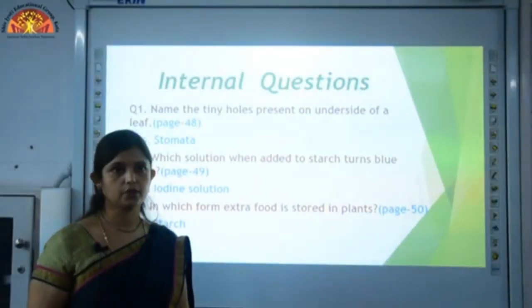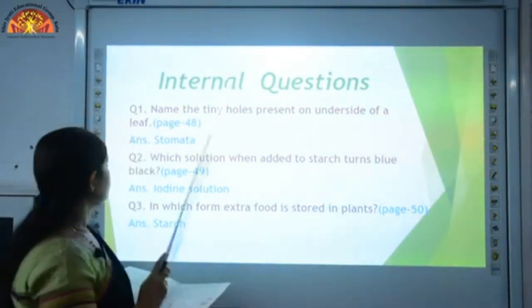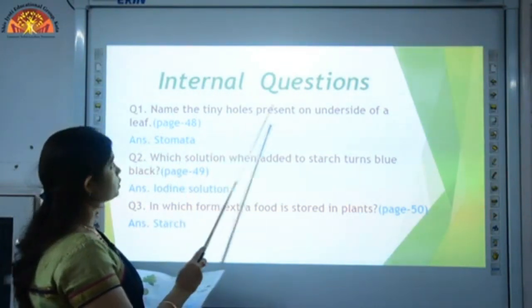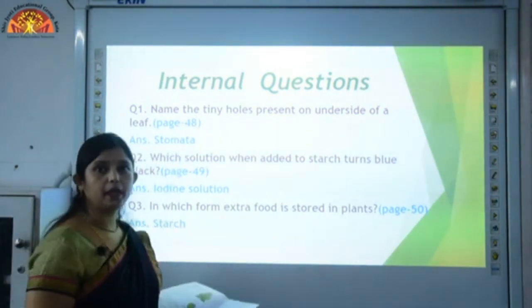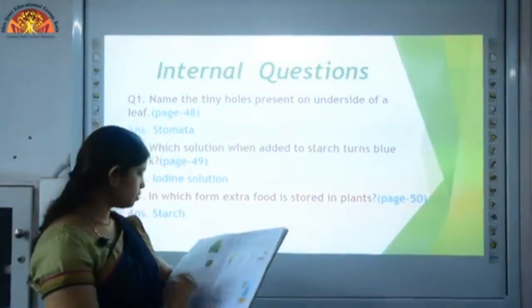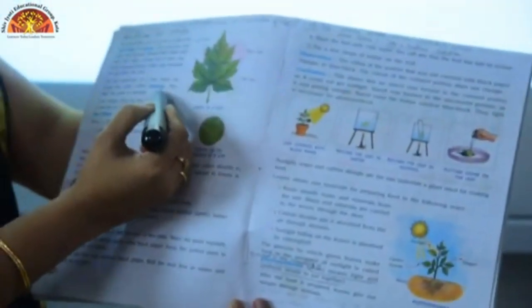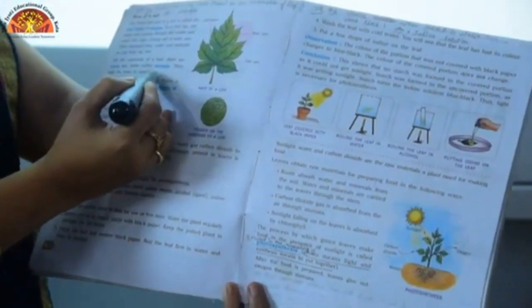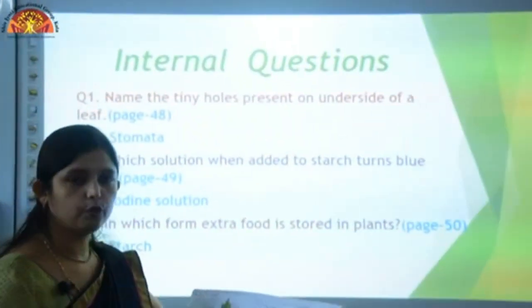Now we will mark the internal questions. Open your books and get ready with your pencils. First question: name the tiny holes present on underside of a leaf. Answer is stomata. This is given on page number 48 — see the second paragraph under the heading 'Parts of a Leaf', second line: 'On the underside of a leaf, there are many tiny holes called stomata.' Mark stomata and write the question above the paragraph.